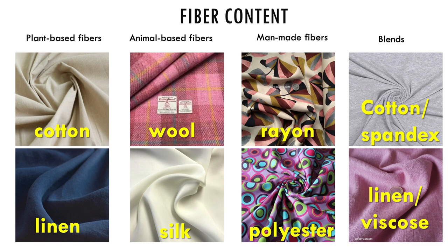Animal-based fibers are cultivated from animals. These include wool, angora, silk, and cashmere. They tend to soak up water very well and be relatively lightweight and warm for their size. They do tend to be very pricey and can be a little bit difficult to work with.